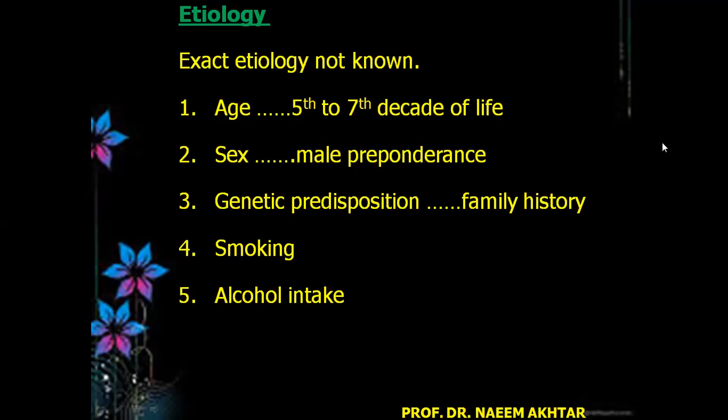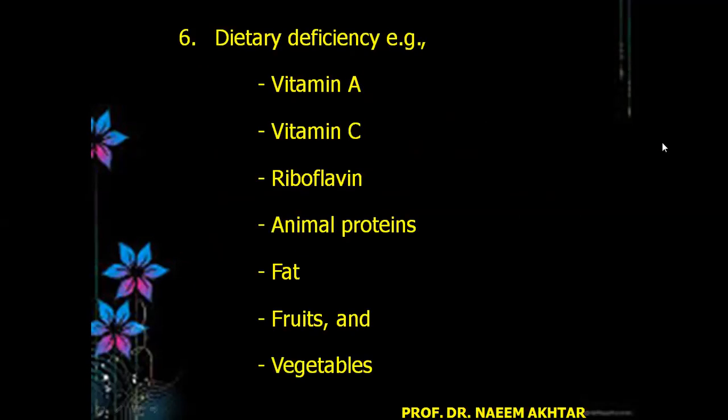Genetic predisposition is a factor, as there is a history of family history of carcinoma of esophagus. Similarly, other risk factors are smoking, alcohol intake, dietary deficiency — for example vitamin A, vitamin C, riboflavin, animal proteins, and deficiency of fat, fruits, and vegetables.